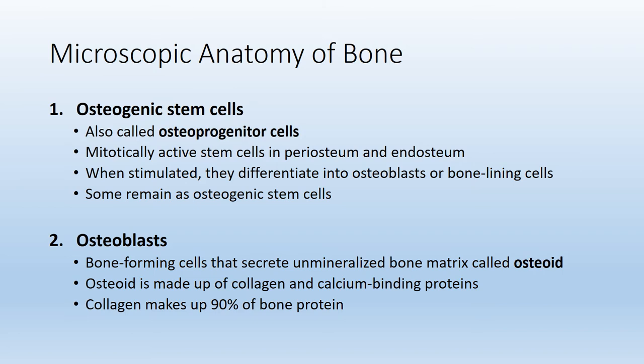The next type of cell is known as an osteoblast. If you remember from the connective tissue lecture, anything with the term 'blast' at the end refers to an immature cell responsible for producing the extracellular matrix for that specific tissue. In this case, osteoblasts will produce the bone matrix, which we call osteoid. The majority of osteoid is collagen as well as calcium-binding proteins to give bone its hardness.